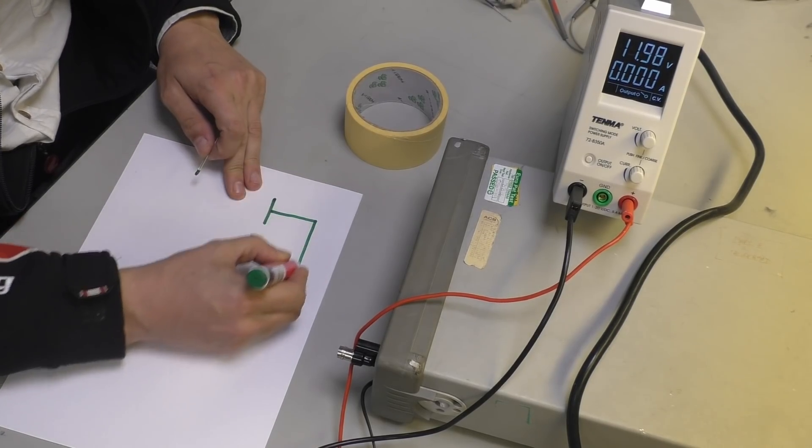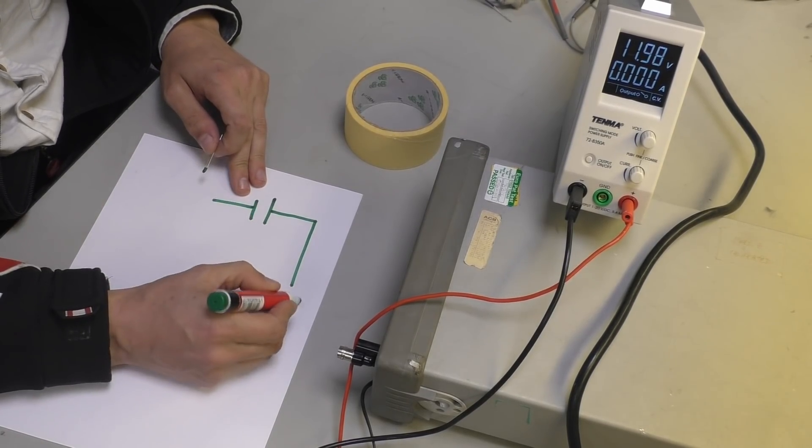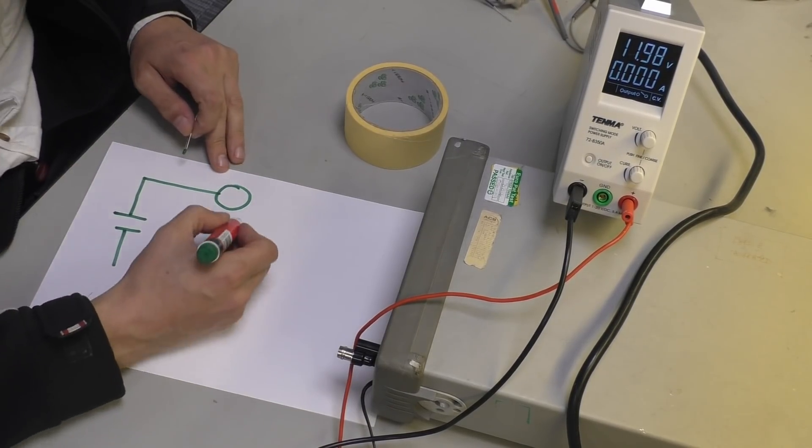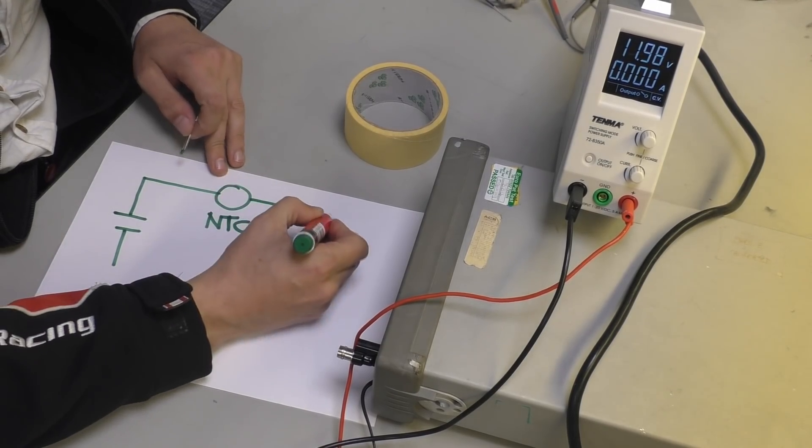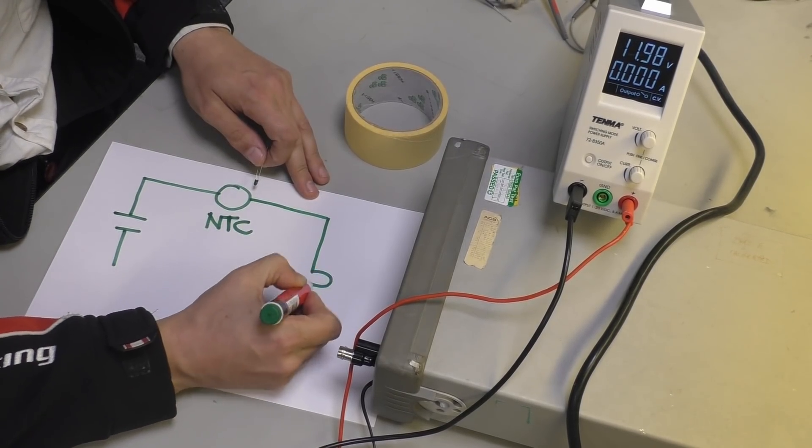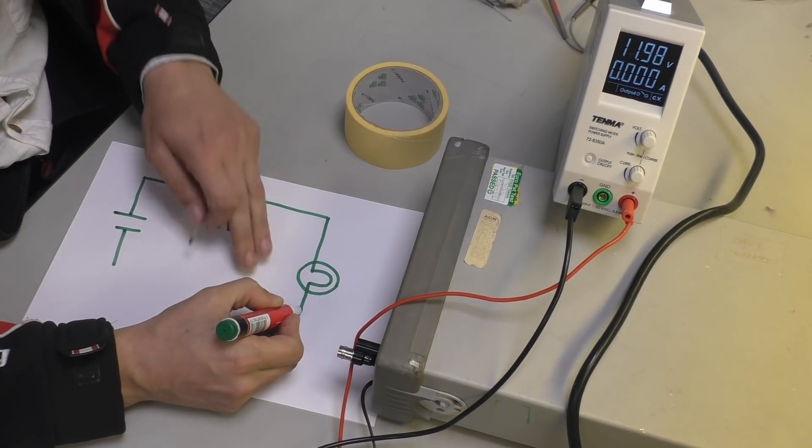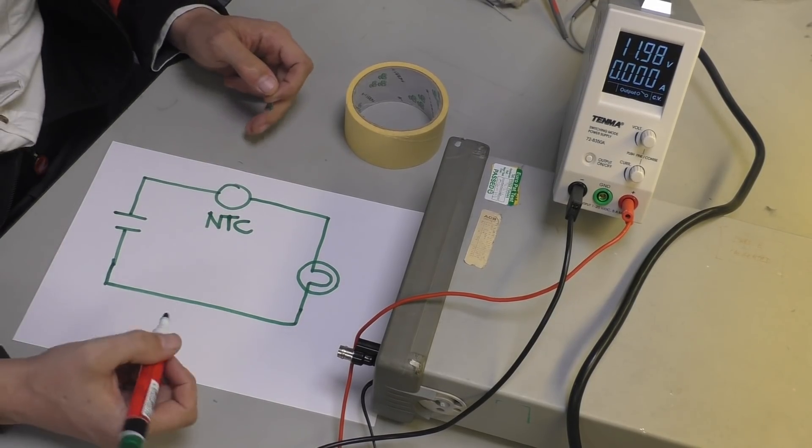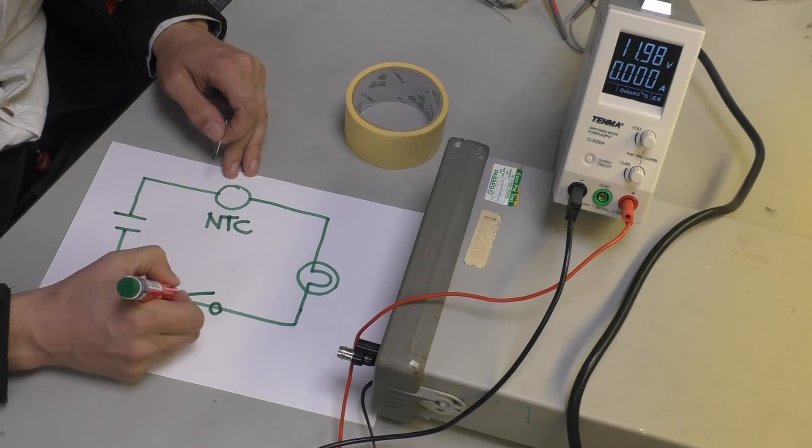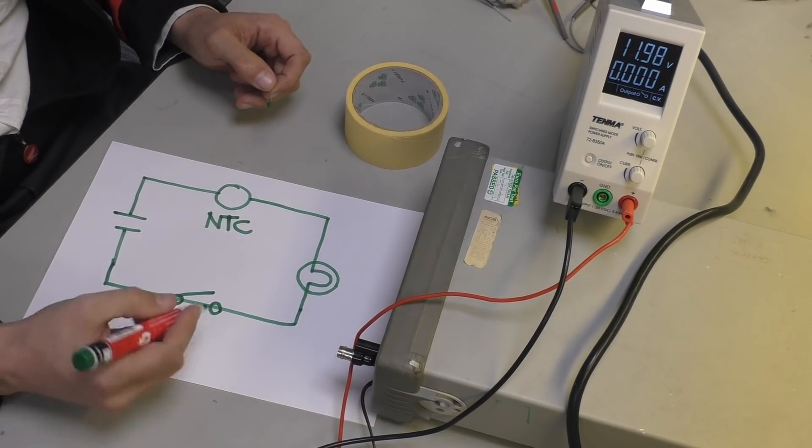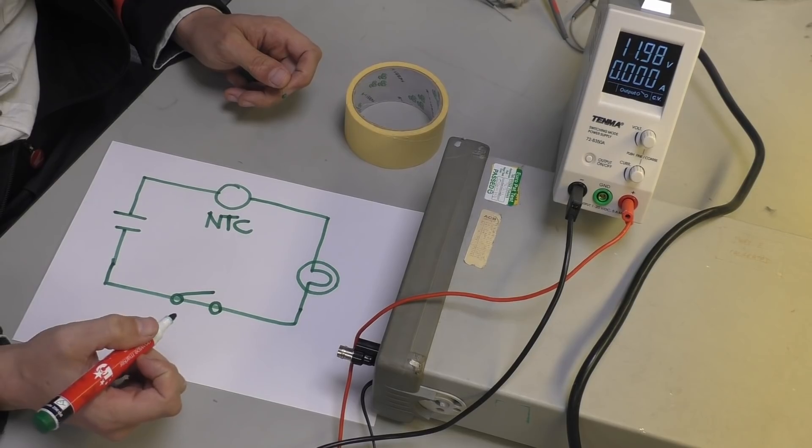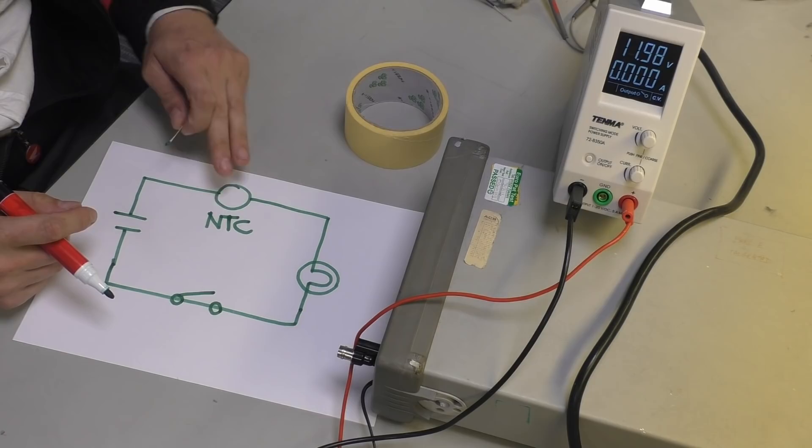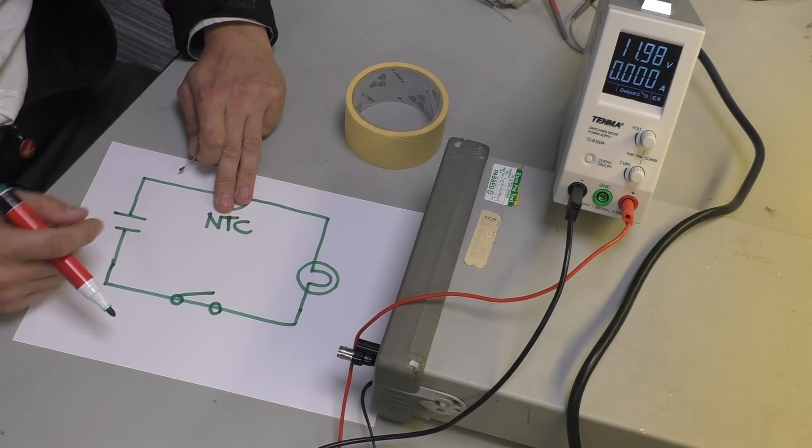Well basically, we have a circuit. So we have a battery like so, we have this thing which is our NTC, that's our NTC like this, and then we have a bulb like so. And then basically this just completes the circuit. Obviously there's your ignition switch in here somewhere, so we'll just put a switch in or whatever, and it's fused and all the rest of it.